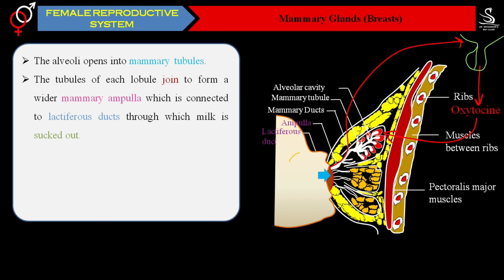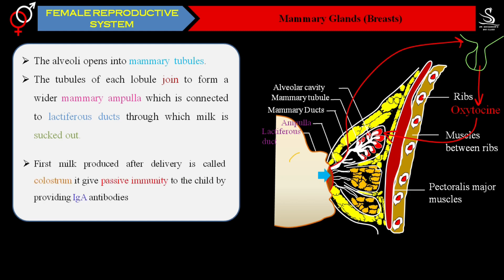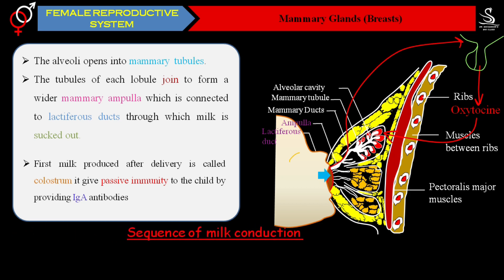The first milk produced after delivery is called colostrum. Colostrum provides passive immunity to the child by providing IgA type of antibodies. Hence doctors suggest not to waste a single drop of colostrum, because through it the child gets disease-resistant capacity from the mother.